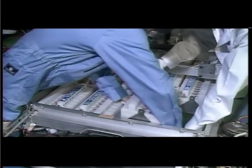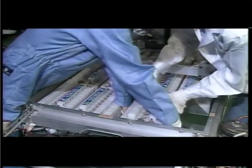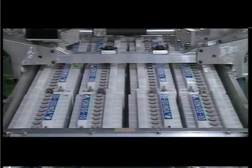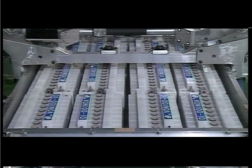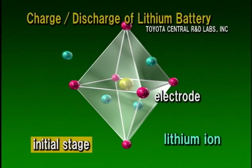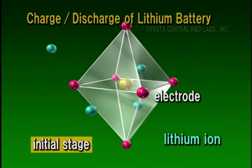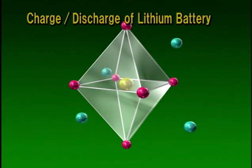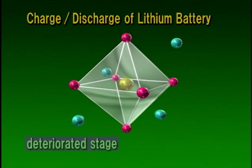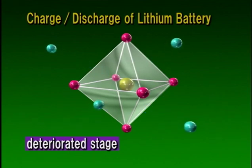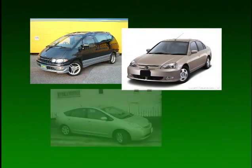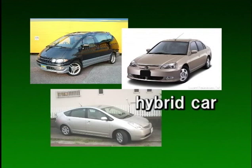Spring-8 has also helped to determine why battery capacity fades over time by observing the charge-discharge cycle on the atomic level. It was found that degradation is caused when the crystal structure, which initially consisted of deformed octahedrons, changed due to repeated charge-discharge cycles to become more regular. This finding has allowed the substantial extension of battery life, which has significantly contributed to the development of hybrid and electric cars.